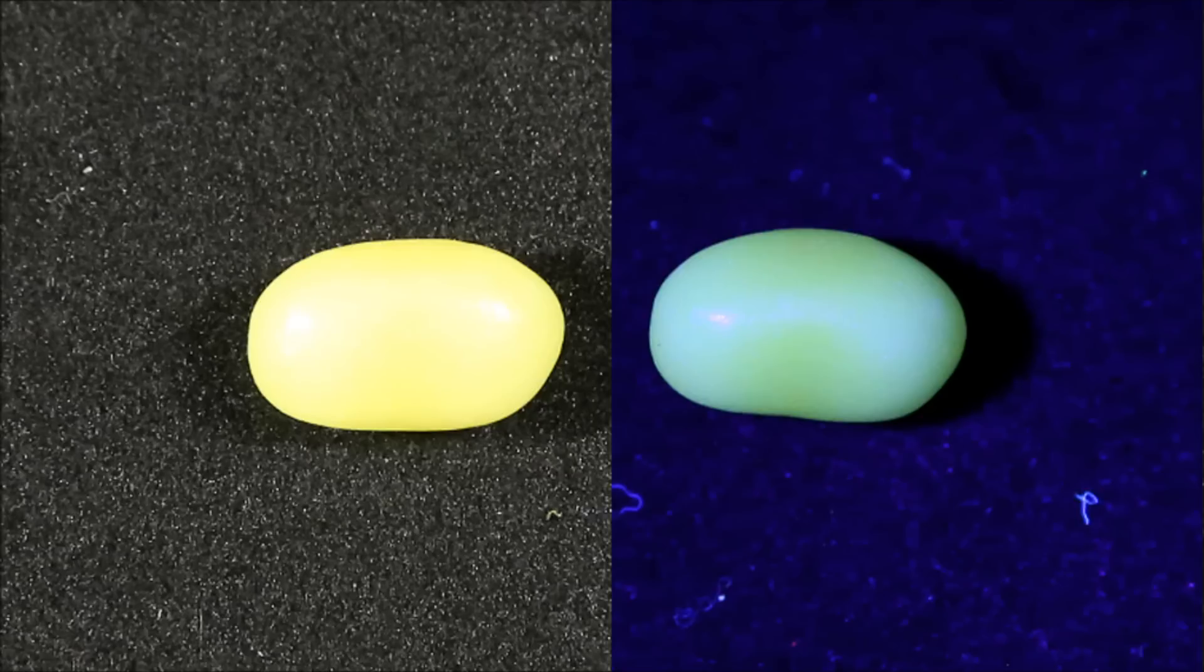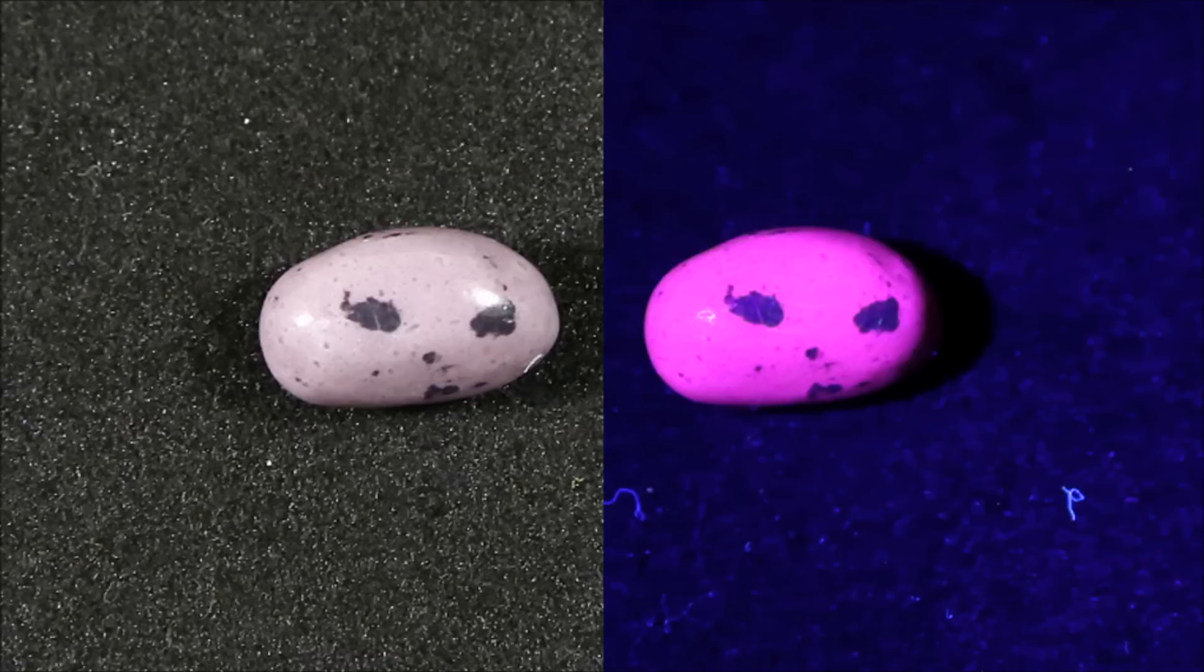Pina Colada goes from yellow to green. Lastly, we have mixed berry, which goes from a very pale violet, almost a beige, with dark spots, to a hot electric pink with purple spots. This one's one of the brightest glowers.